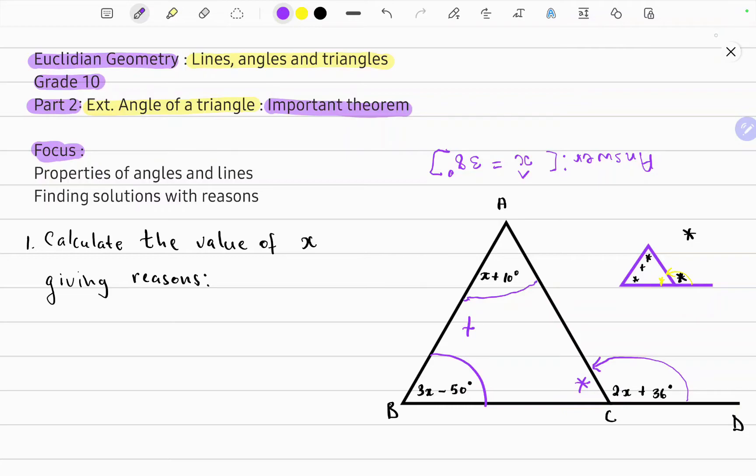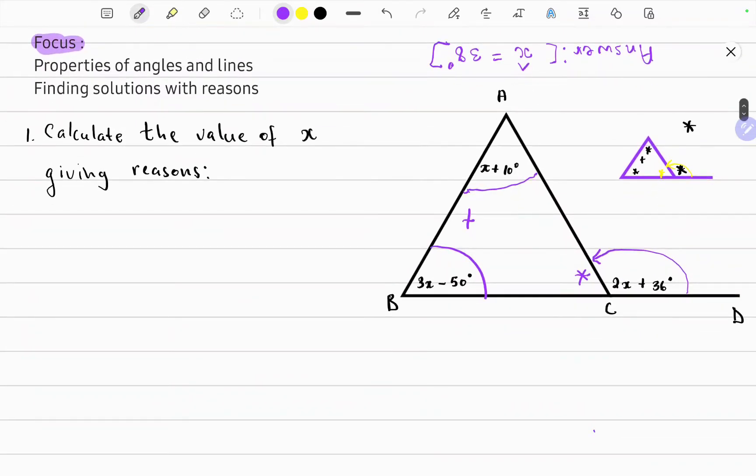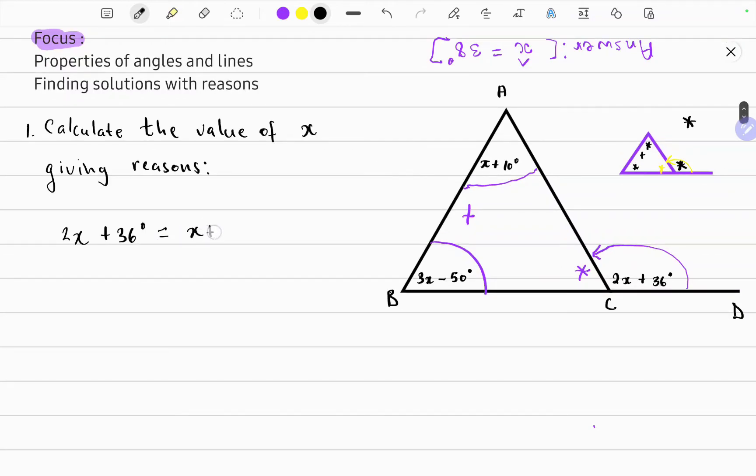So the question wants us to calculate the value of x giving reasons. So let's find the solution. It states that the exterior angle, which in this case is 2x plus 36 degrees, is equal to the sum of the interior opposite angles. So that is x plus 10 degrees plus 3x minus 50 degrees.